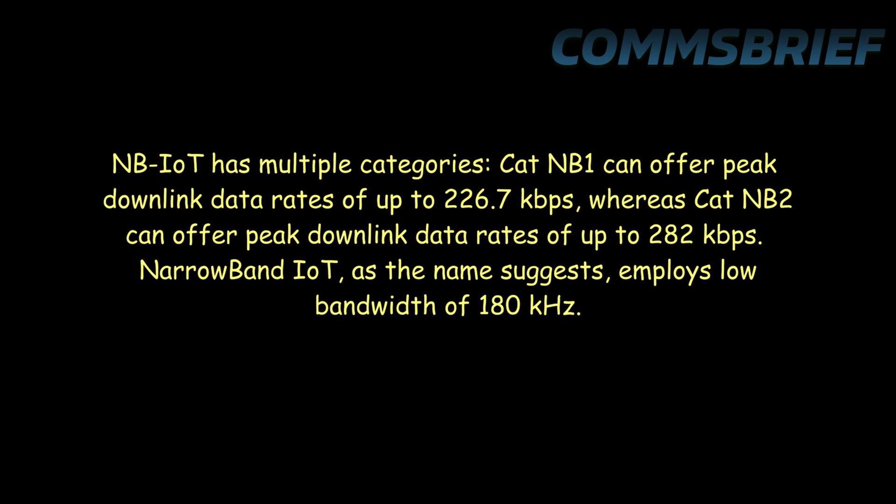Narrowband IoT has multiple categories. Category NB-IoT can offer peak downlink data rates of up to 226.7 kbps, whereas another category can offer peak downlink data rates of up to 282 kbps. Narrowband IoT, as the name suggests, employs a low bandwidth of 180 kHz — a very small bandwidth compared to LTE-M's 1.08 MHz.